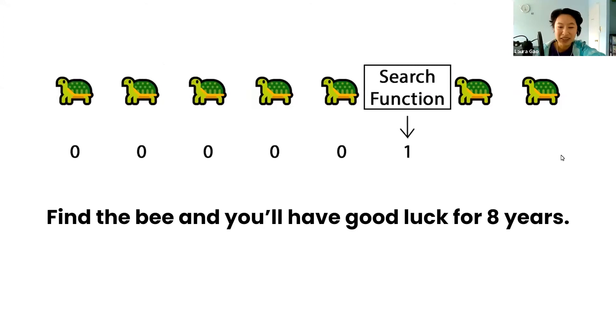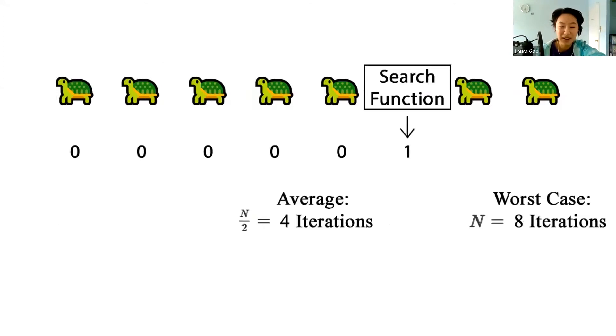Once we hit them, in the worst case scenario we'll need to repeat our search box eight times to find the bee if the bee happens to be at the end. But we can do better than that with a quantum computer. We only need to repeat the search box twice to find the bee.